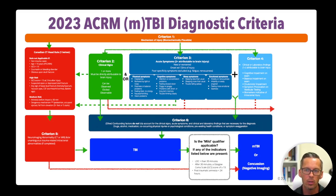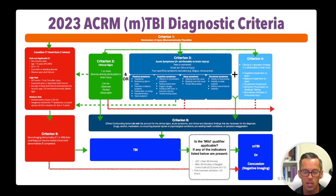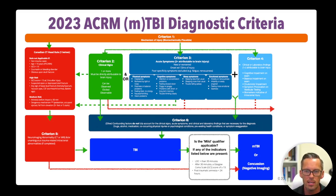If you go through the symptom checklist and the patient has two or more that are either new or worsened within 72 hours, then you need criterion four to make your diagnosis. Criterion four is clinical or laboratory findings — you need one or more attributable to a brain injury. Examples include cognitive tests or findings, balance findings, oculomotor findings, symptom provocation with vestibular testing, or biomarkers indicative of intracranial injury. You could do the modified Balance Error Scoring System, the VOMS, the SAC, impact test, C3 Logix, CNS Vital Signs — all of these would indicate a laboratory finding.